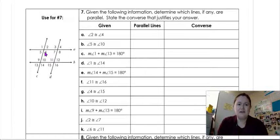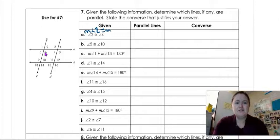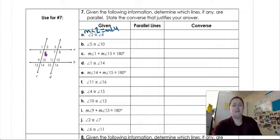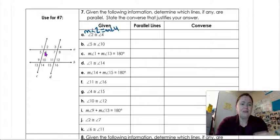So remember that this squiggly line here is a way so that I don't have to write measure angle 2 equals measure angle 4. I can just write angle 2 is congruent to angle 4, and it means the same thing with less stuff.